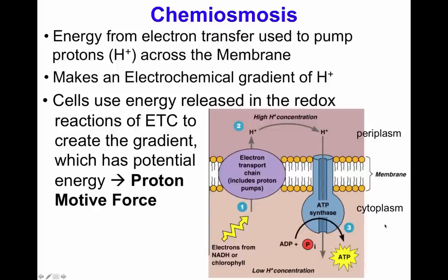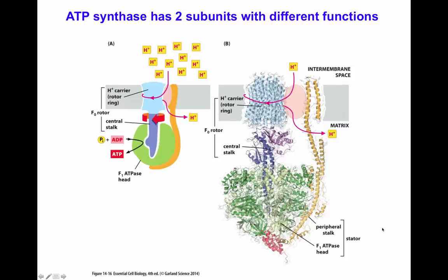This brings us to the point of chemiosmosis. The energy from electron transfer is used to pump protons across the membrane, creating the electrochemical gradient of protons across the inner membrane of the mitochondria. That energy of the electrochemical gradient will then power the ATP synthase, which uses three protons to generate one ATP molecule. The cell uses the energy released in the redox reactions of the electron transport chain to create the gradient — the proton motive force. The protein involved in this system is the ATP synthase.